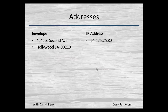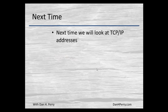On an envelope you might have an address like 4041 South 2nd Avenue, Hollywood, California. The IP address would be a number — the example I've given is 64.125.25.80. In future videos we'll be talking a lot more about IP addresses, how they work, and why they're represented in this manner. Next time we're actually going to start looking at IP addresses.